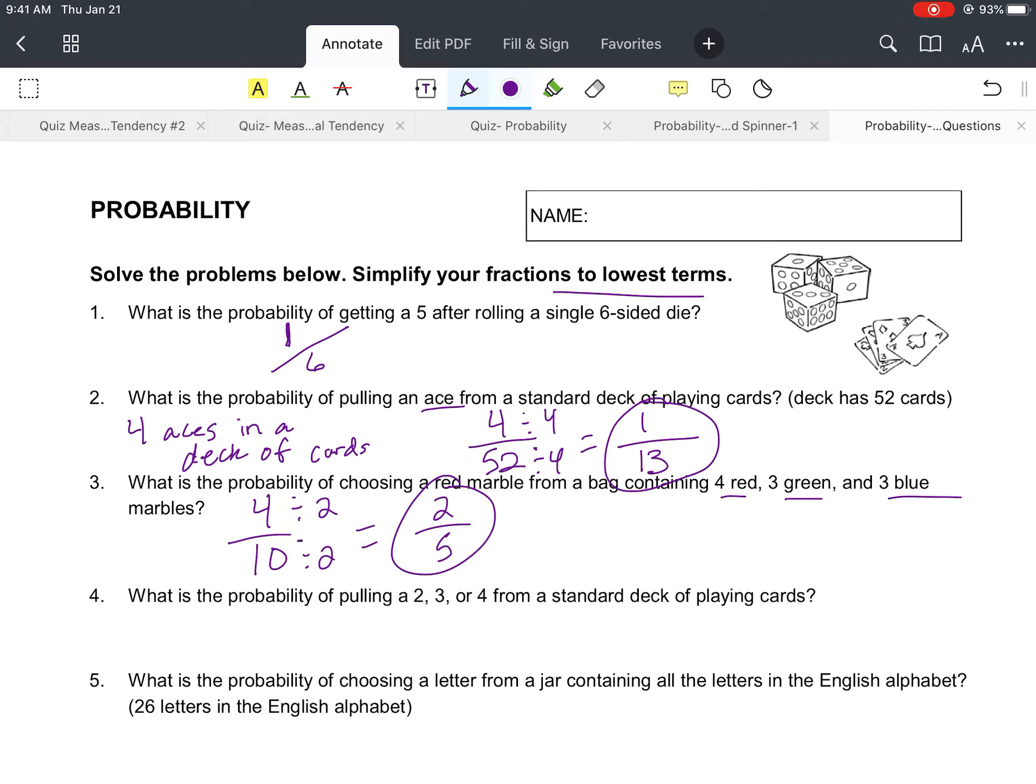Number four, it says what is the probability of pulling a two, three, or four from a standard deck of playing cards? Well, again, there are four sets, four cards of two, four cards of three, and four cards of four, because of the different suits, the diamonds, the hearts, the clubs.